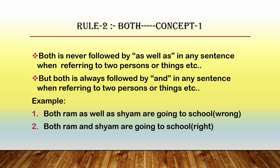In this second rule, we will learn three concepts on how to use 'both' in any sentence. The first concept tells us that when we are referring to two persons, things, subjects, cities, or anything like that in a sentence using 'both', we should never use 'as well as' along with 'both'. Instead of 'as well as', we can use 'and' along with 'both' in order to refer to two persons in a single sentence.